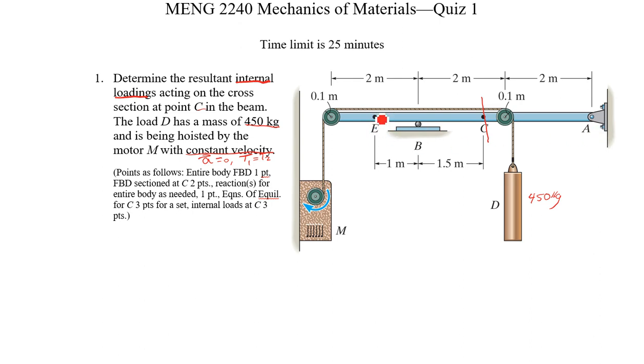If we were taking it at point E, for example, we would not need any reaction. Because if we took the left side, we don't have any supports in that section causing reactions acting on that segment. We'll get one point for equations of equilibrium. So we'll get one point each for a set of three. Then finally we'll find the internal loads at that point.